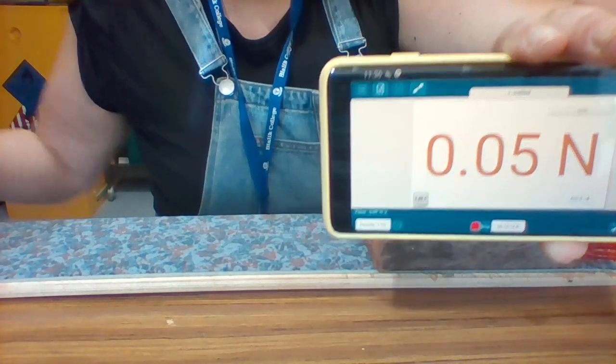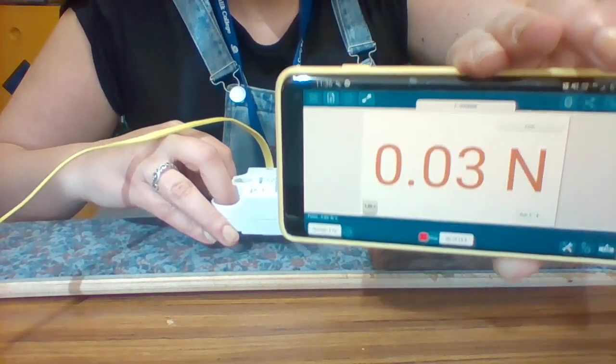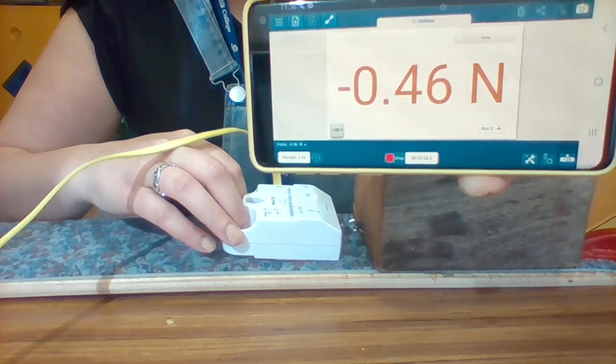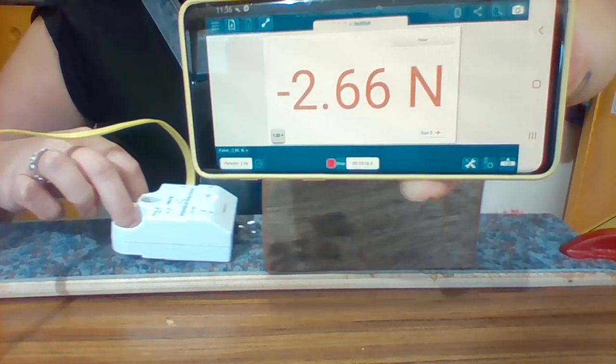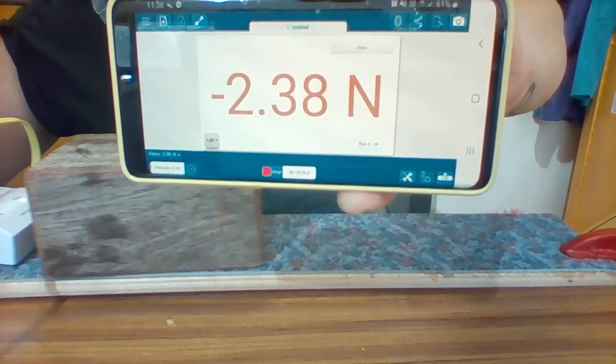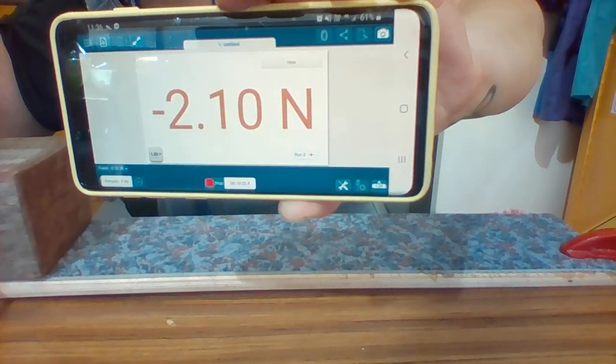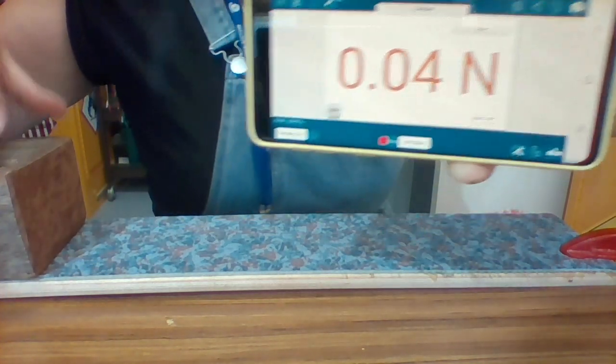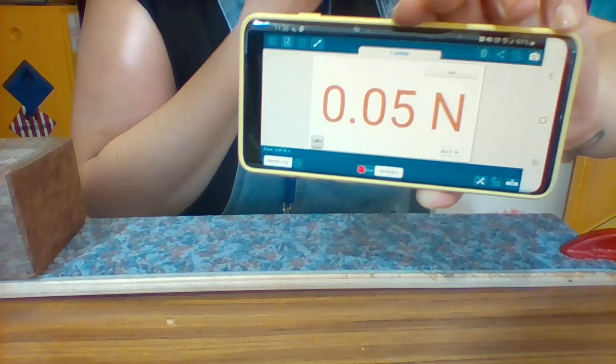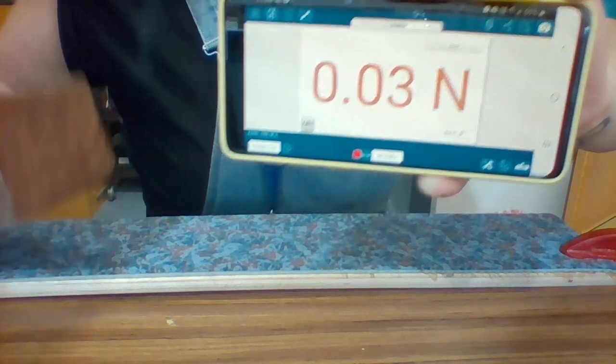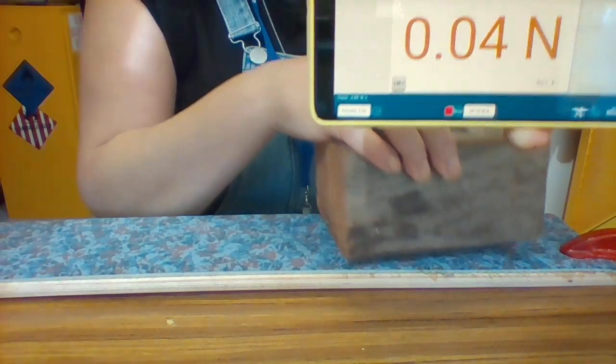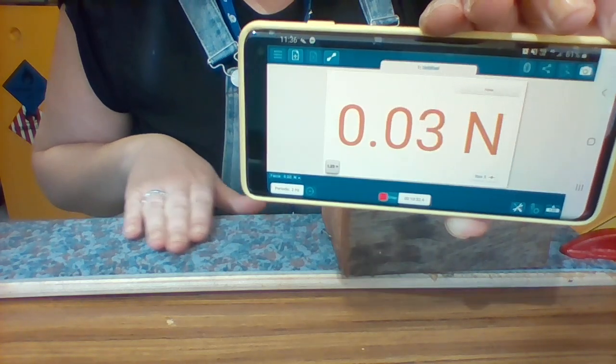So you can see the measurements. Hooking it on and dragging. Alright. Write down the newtons it took to drag this block of wood along this smooth carpet.